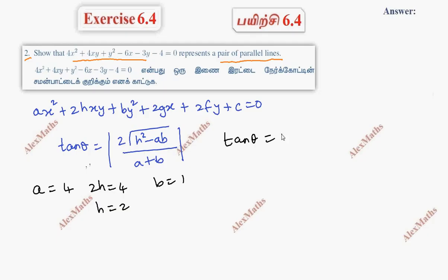Tan theta equals 2 root of 4 minus 4 into 1, whole divided by 4 plus 1. That means 4 minus 4, so tan theta equals 0, therefore theta equals 0.